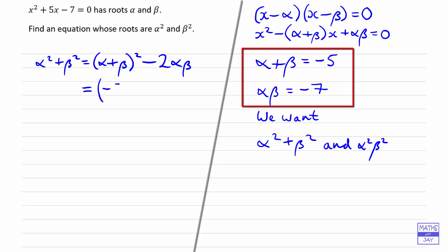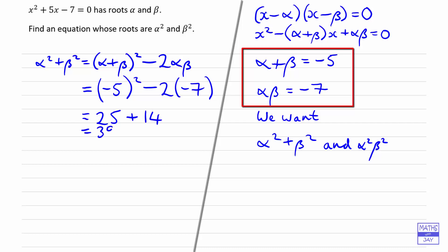So alpha plus beta is negative 5, and alpha beta is negative 7, so we've got minus 2 multiplying minus 7. So that gives us 25 plus 14, which gives us 39 for alpha squared plus beta squared.